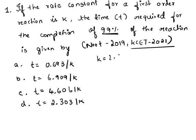the formula is k = 2.303/t × log(R₀/R), where R₀ is the initial concentration and R is the final concentration. Here, let R₀ = 100 and R = 1, so k equals